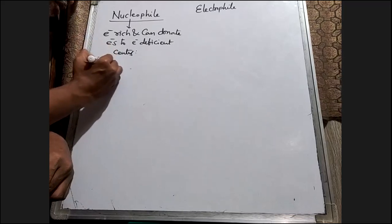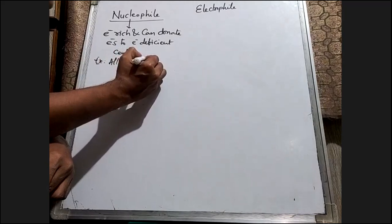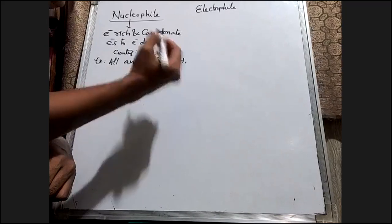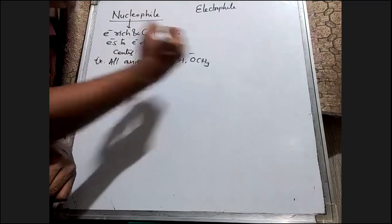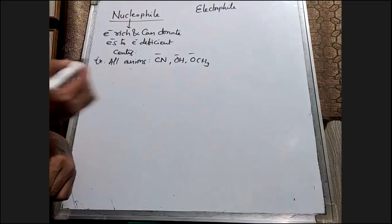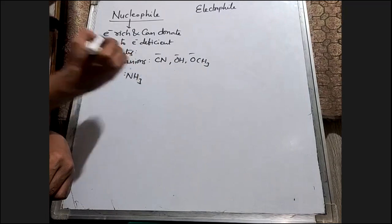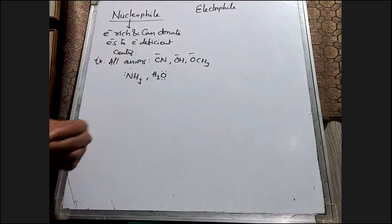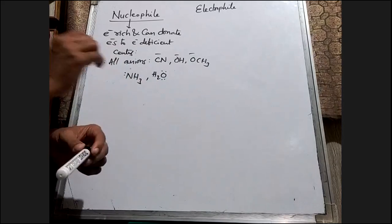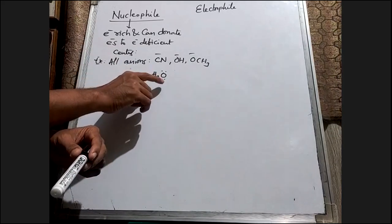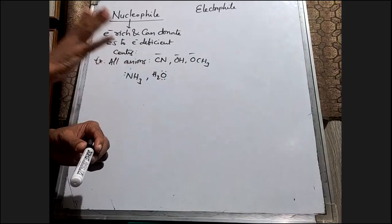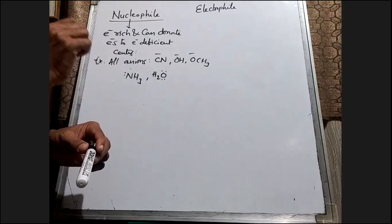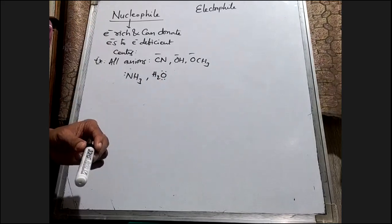For example, all anions act as nucleophiles — for example, CN minus, OH minus, OCH3 minus. All these species act as nucleophiles. Similarly, there are some neutral molecules; for example, ammonia, H2O, and NH3, because there is a lone pair of electrons on the nitrogen atom of NH3 and the oxygen atom of H2O.